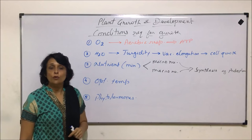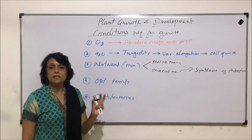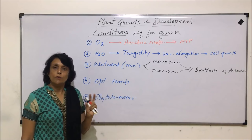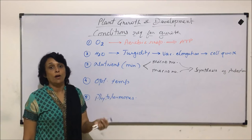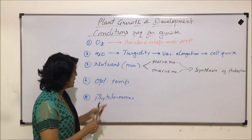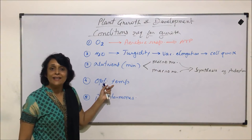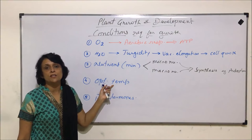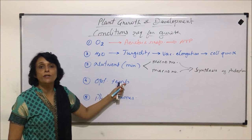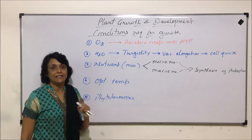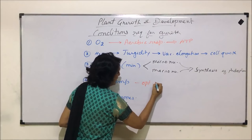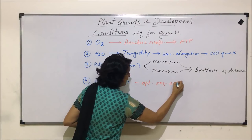Optimum temperature — as we have seen in the chapter of photosynthesis — is different in C3 and C4 plants. Depending upon the plant, that optimum temperature is essential because it is going to help create optimum enzymatic activity.